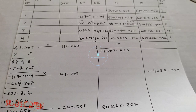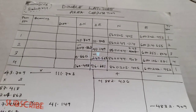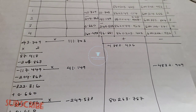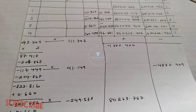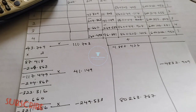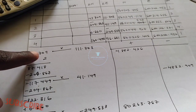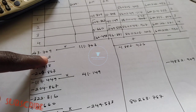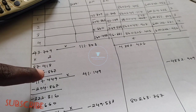Since we said we are using the double latitude method, the next thing is we are going to pick the first latitude. As the name implies, double latitude means you are going to use the latitude more than once — specifically twice. So the first thing is that you pick the first latitude, which in this case is 43.709.